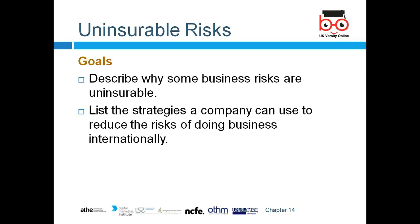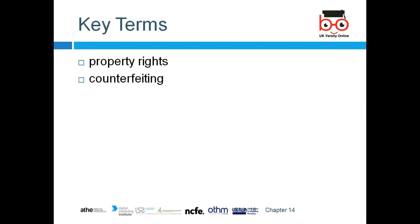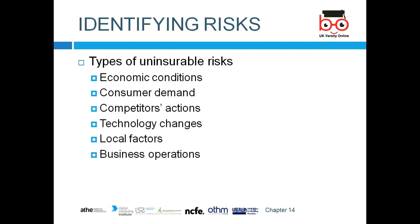Some business risks are uninsurable — we need to list strategies to reduce them. Not everything can be insured. In some countries with a lot of risk, we can reduce it through making partnerships or choosing foreign joint ventures instead of foreign direct investment. Uninsurable risks include: economic conditions, consumer demand, competitor actions, technological changes, local factors, and business operations.